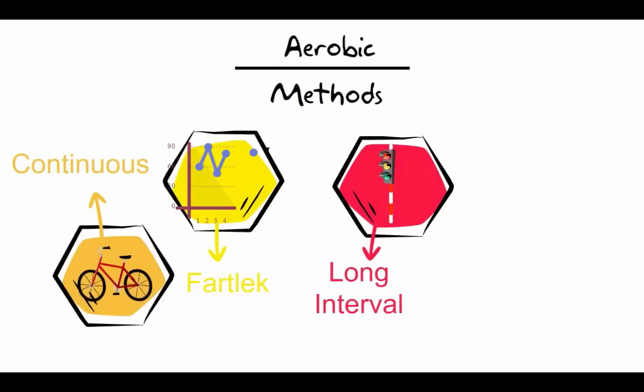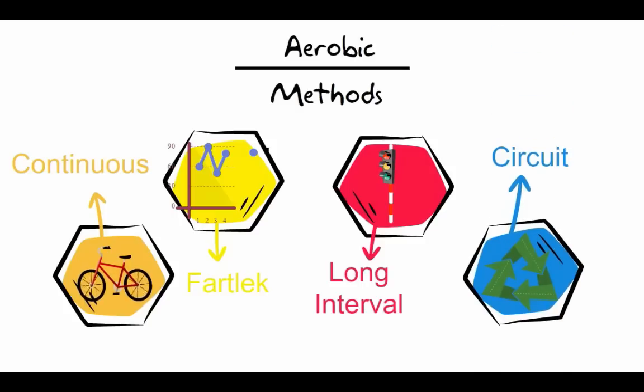Finally for aerobic training, there's circuit training. The circuit training method is various activities that are normally done for a set period of time before moving on to the next activity. An athlete would rotate through each activity until the circuit is complete.